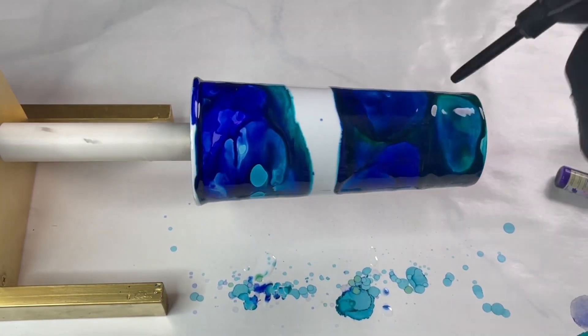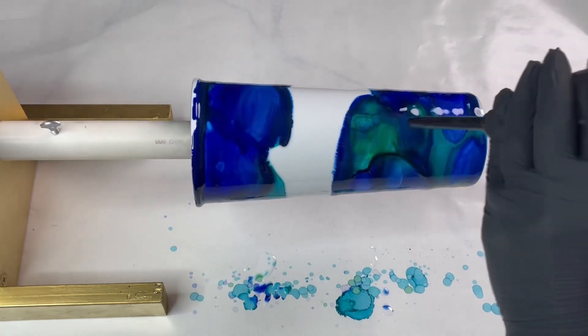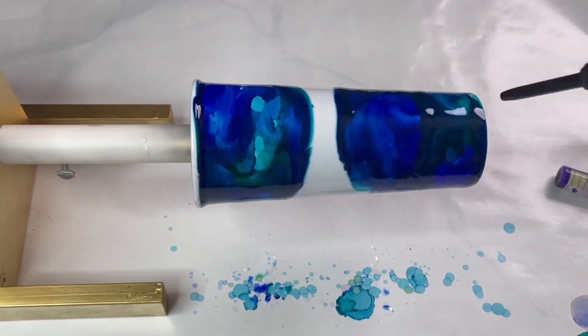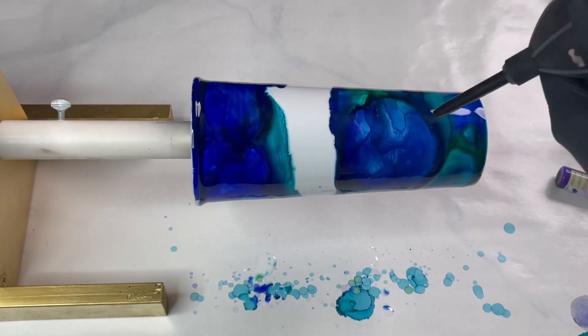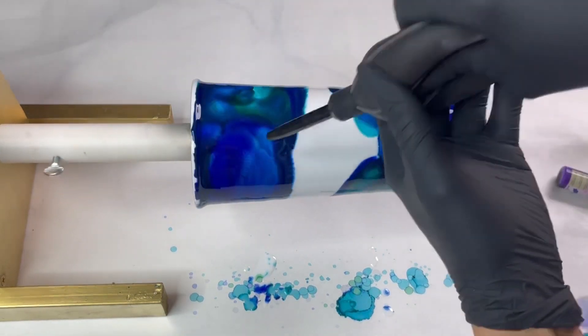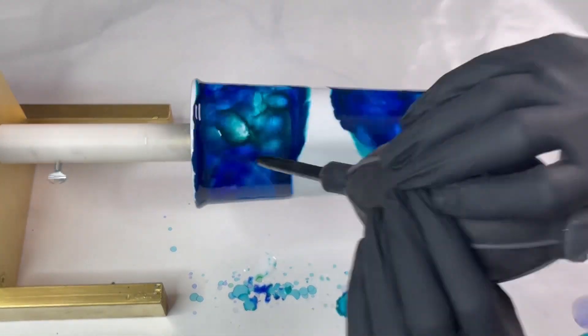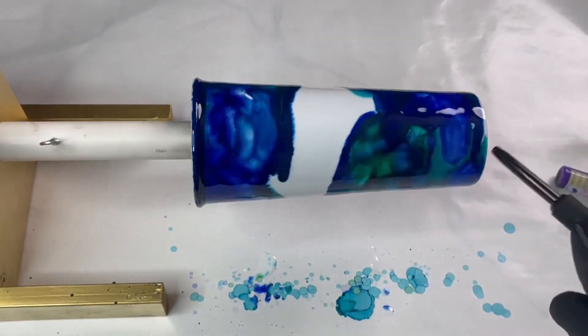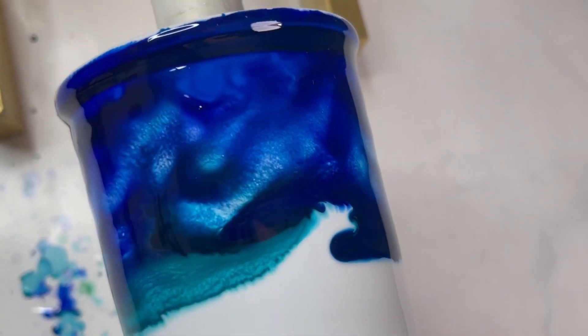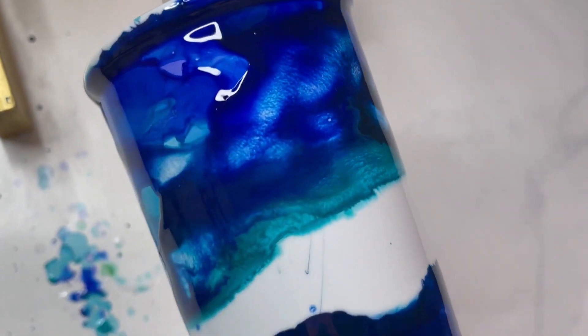Then I'm taking my little air puffer thing for alcohol ink and just kind of moving that around. I feel like it just kind of looks streaky when it's turning, so doing this kind of adds a little bit of a different look. You kind of get just little different pockets in there of color and pigmentation.